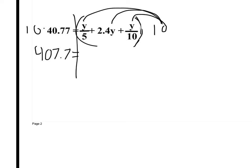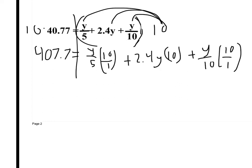Now what I'm going to do is I'm going to write it out the way you should. So y plus 5 times 10. 2.4y times 10. And then y over 10 times 10. Now we go through and we work out what we can. I have y divided by 5 times 10. What would cancel? The 5, right? Did I get rid of the denominator? Yes, I did.